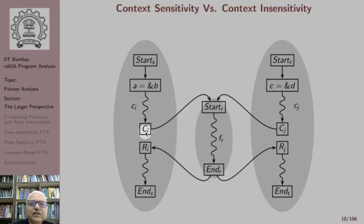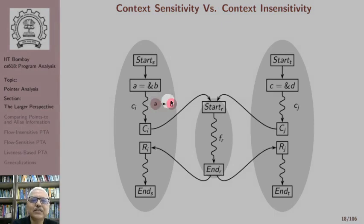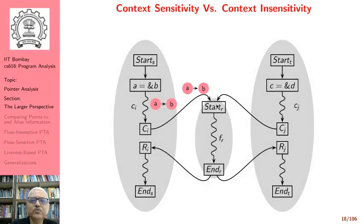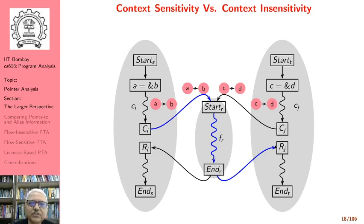There are two calls to procedure R. From S, we compute a points-to b, which reaches R where flow function FR is applied. From T, c points-to d information reaches R. Assuming FR does not change the points-to information, if we consider the path where a call from S returns into T's context, this is interprocedurally invalid. If a call to R was made from S, then R must return to S.